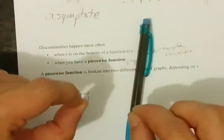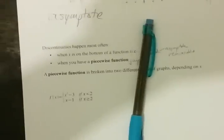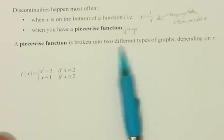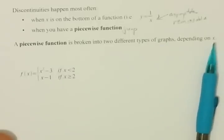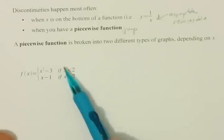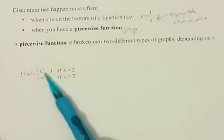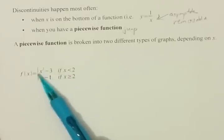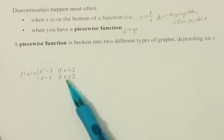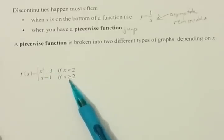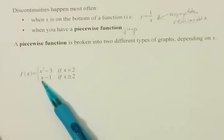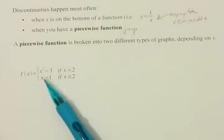A piecewise function can be broken up into two different types of graphs depending on what value of x you're talking about. To the left of 2, this graph looks exactly like x squared minus 3, a parabola. To the right of 2, and also exactly at 2, this function looks exactly like x minus 1, which is a line.